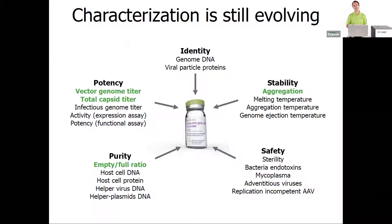Characterization is still evolving to catch up to all the things we need to know about AAV. We have a large list of characterization parameters, but we'll be focusing today on what's shown in the green text — the metrics that Stunner can offer. With titer, we can look at vector genome titer and total capsid titer, and also the ratio of those two, which is the empty-full ratio. And because Stunner has DLS, we'll also be looking at aggregation.